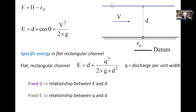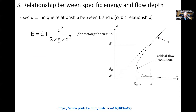Assuming a constant unit discharge, we have a relationship between specific energy and water depth which is in fact a cubic equation, plotted on the right-hand side with the horizontal axis being the specific energy, the vertical axis being the water depth, for a flat rectangular channel. We can see that we have two asymptotes: the horizontal axis and a one-in-one slope line (d equals E).